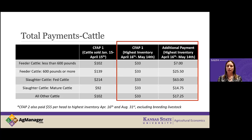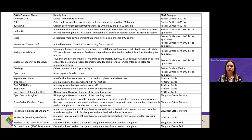Just to emphasize, these are the cattle in inventory on April 16th to May 14th that were claimed. USDA has defined what animals fall into each category. Those definitions are available in the slides for producers to review in more detail on their own.